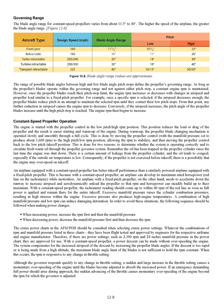Constant Speed Propeller Operation. The engine is started with the propeller control in the low pitch/high RPM position, which reduces the load on the propeller and results in easier starting and warm-up. During warm-up, the propeller blade-changing mechanism is operated slowly and smoothly through a full cycle—moving the propeller control with manifold pressure set to produce about 1,600 RPM to the high pitch/low RPM position, allowing the RPM to stabilize, then moving the control back to the low pitch takeoff position. This is done to determine whether the system is operating correctly and to circulate fresh warm oil through the propeller governor system, replacing oil that has been trapped in the propeller cylinder since the last engine shutdown.